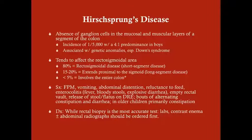Hirschsprung's disease is an absence of ganglion cells in the mucosal and muscular layers of a segment of the colon. This lack of nerves means the colon can't relax properly, and because it can't relax, it can't conduct the bolus of stool down the colon — therefore the stool gets stuck, resulting in constipation.